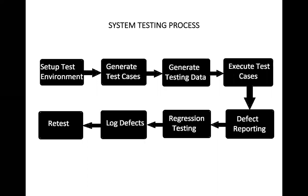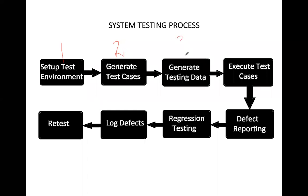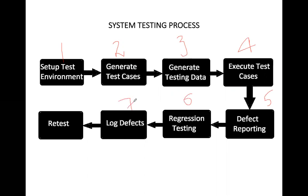What are the various steps followed in the system testing process? First, we set up the environment. Then we generate the test cases. Then we generate the test data. Then execution of test cases takes place. Then defect reporting is done. Then regression testing. After regression testing, we log all the defects and document them properly. And then reset. If required, we go back to step one.